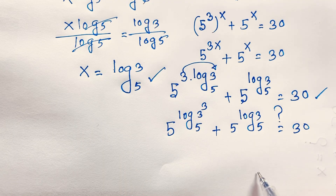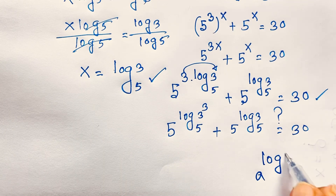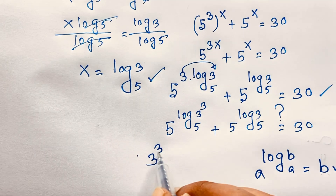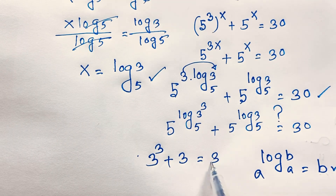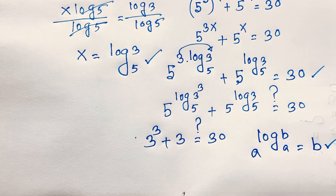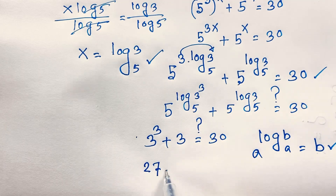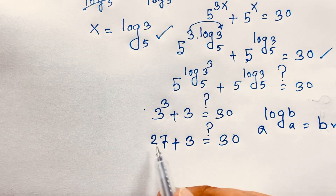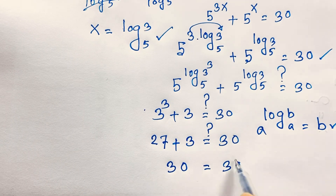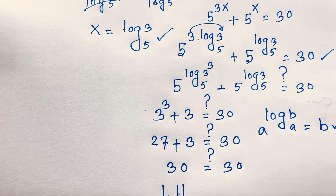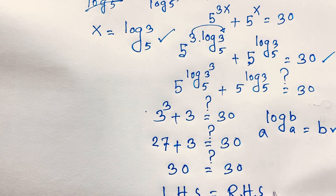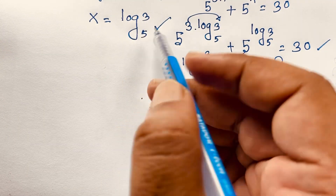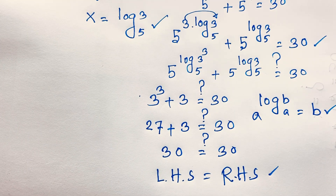We know that a to the power log b base a equals b. Applying this formula, we get 3³ + 3 = 30. Then 3³ = 27, so 27 + 3 = 30, which equals 30. The left-hand side equals the right-hand side, so x = log₅3 is confirmed as our real solution in this exponential math problem.